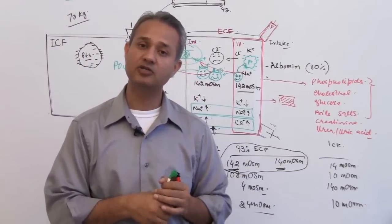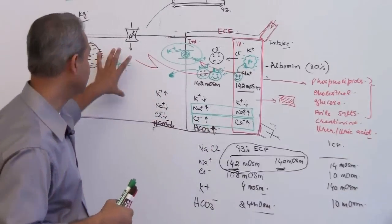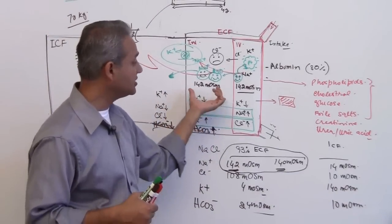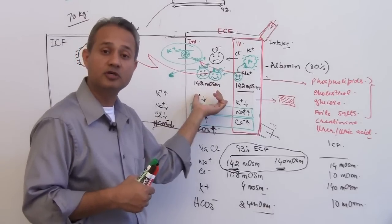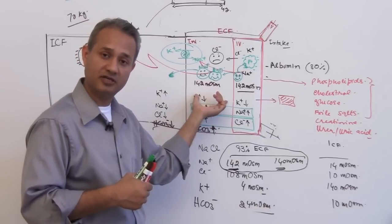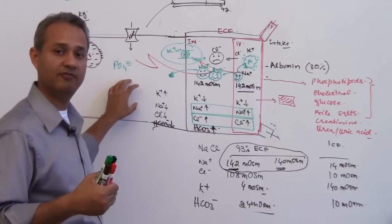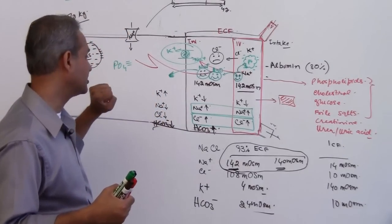Non-pitting edema actually means either the cells are swollen, or the edema is present in the interstitial space but it is fibrosed - there is fibrosis which has occurred. So non-pitting edema usually means that we have swollen cells.